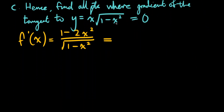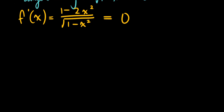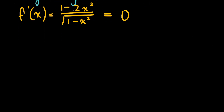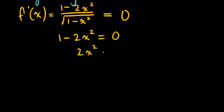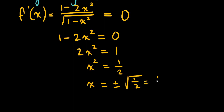The next part asks us to find all points where the gradient of the tangent to the original function is equal to 0. We already have the derivative, so we just need to set it equal to 0. It's asking for all points, so that should be a hint you may get more than one answer. When we have a fraction like this, only the numerator has to equal 0. So 1 minus 2x squared equals 0, giving 2x squared equals 1, x squared equals 1/2, and x equals plus or minus the square root of 1/2, which is root 2 over 2.